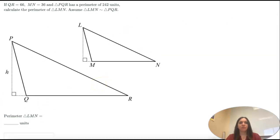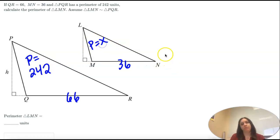This is our last one. So hang in there. QR is 66. MN is 36. And the perimeter of this one. PQR is 242. And we're trying to find the perimeter of this one. So. I don't know if you read this in your reading. But a side ratio equals a perimeter ratio. They're the same.